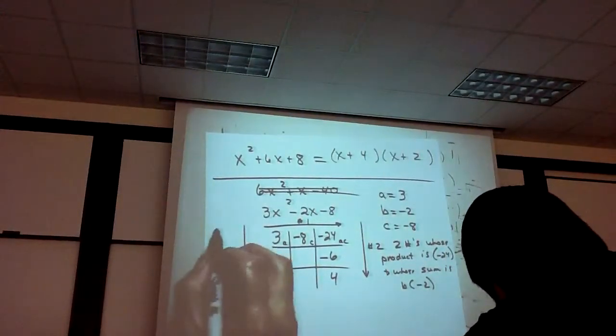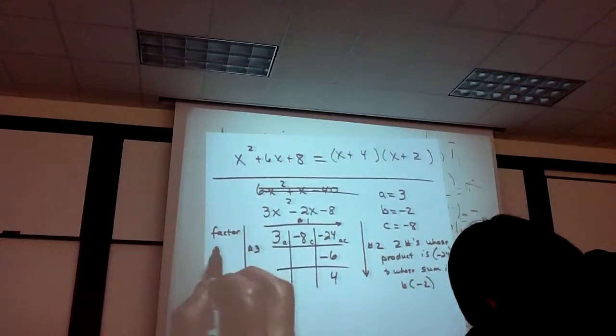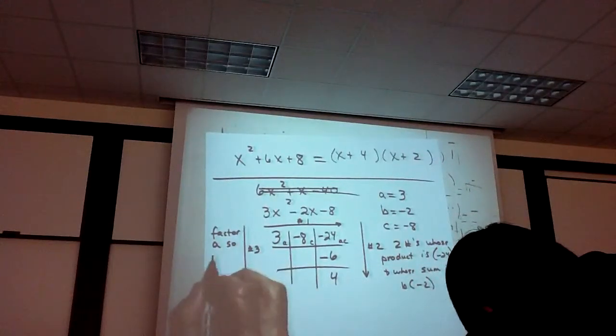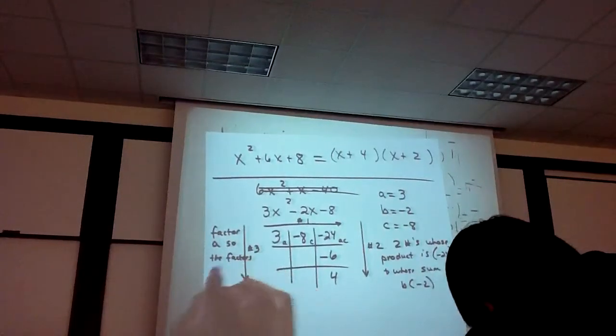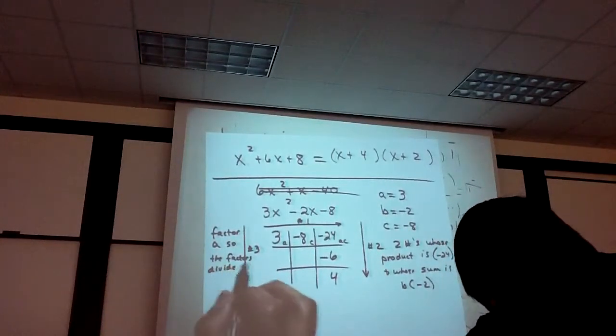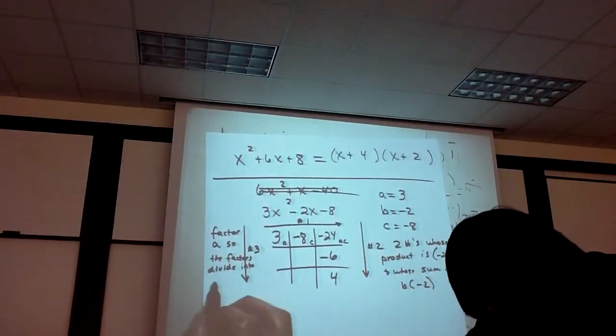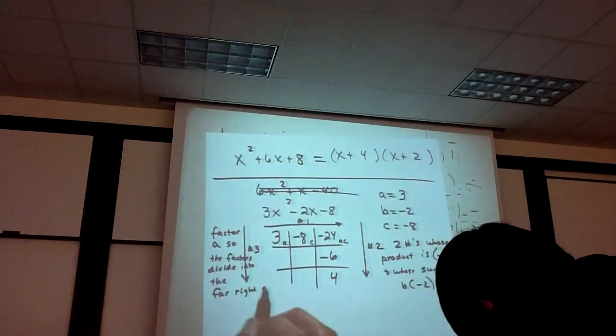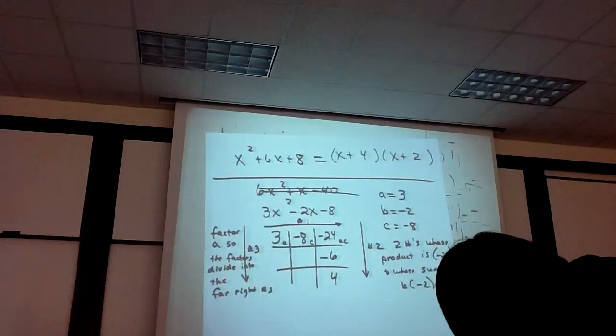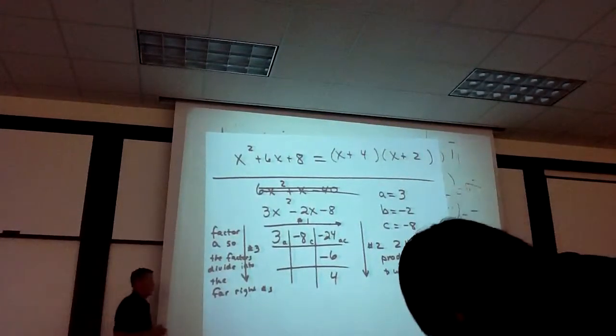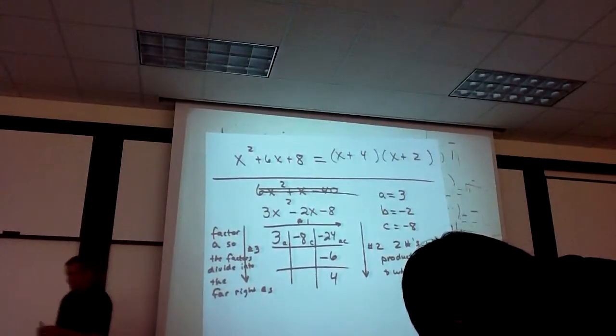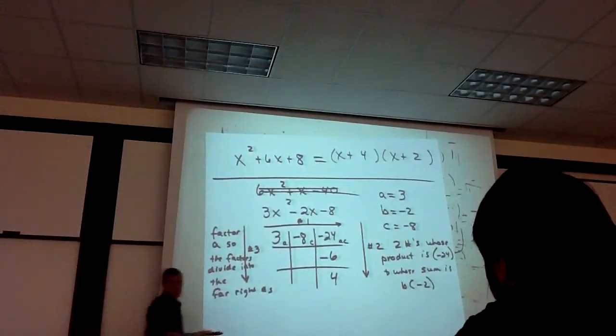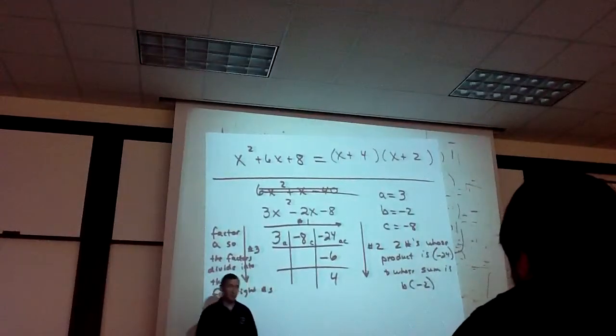Step number three. I want to factor a, which by the way is 3, so the factors divide evenly into the far right numbers. Now, there's not a real succinct way to say that. But I want to factor 3. And it factors in limited ways, right? Either 3 and 1 or 1 and 3. That's the only way you can factor 3.